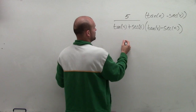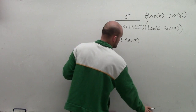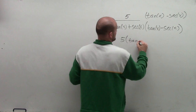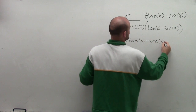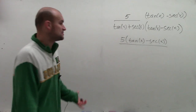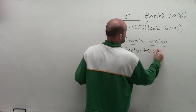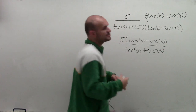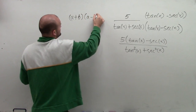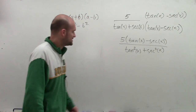In the numerator, I have 5 times tangent of x minus secant of x. In the denominator, tangent of x plus secant of x times tangent of x minus secant of x — that's the difference of two squares — gives me tangent squared of x minus secant squared of x. Remember, if you have (a + b)(a − b), that gives you a squared minus b squared, so I didn't need to FOIL or do any other multiplication.